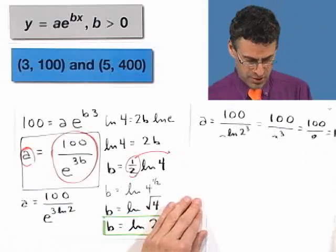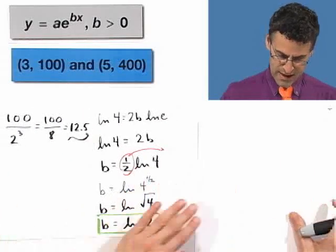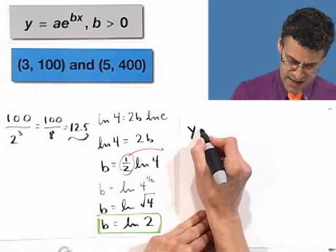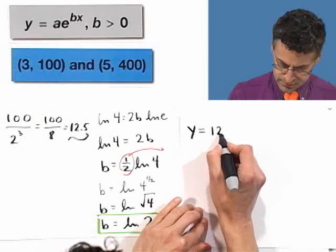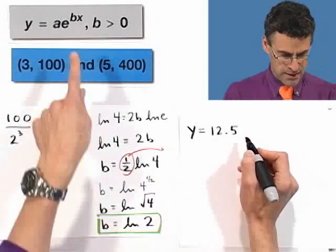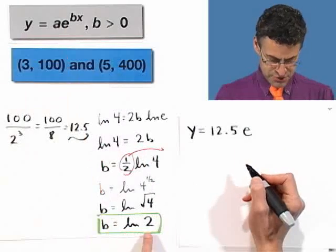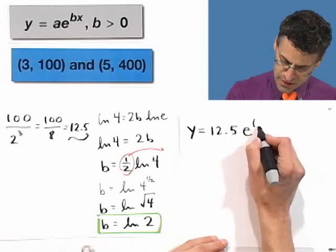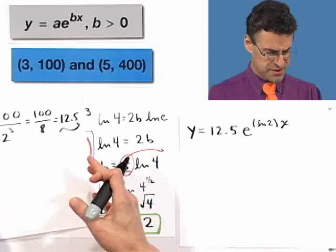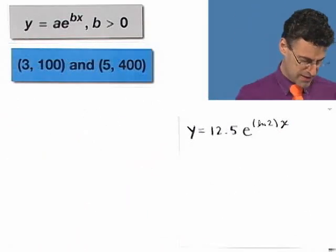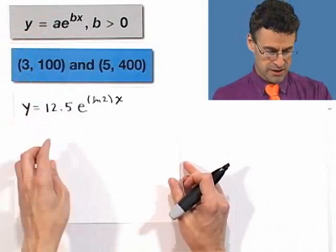So all that work allowed us to figure out that A equals 12.5. We already figured out B equals the natural log of 2. And so, after all this work, we can put these pieces of the puzzle together and see that the function is Y equals 12.5 E to the natural log of 2 times X. And now all of this crazy computation that we did, we can throw all that away. Because now, these two pieces of information allowed us to conclude this.